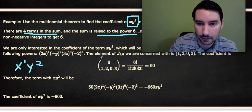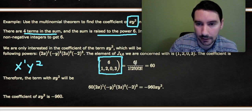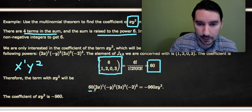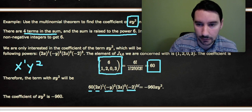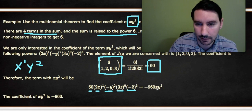So with those coefficients, we have 6 choose (1,2,0,3). Since we need 1 (2x), 2 (-y)'s, 0 (3z)'s, and 3 (-2)'s. And that is 6! over 1!2!0!3!, which equals 60. So we get 60 times (2x)¹ times (-y)² times (3z)⁰ times (-2)³, which when multiplied out is -960xy².